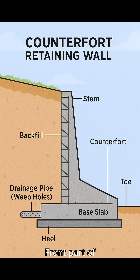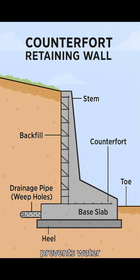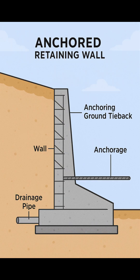Toe — the front part of the base slab. Heel — the rear part of the base slab under the backfill. Drainage pipe and weep holes prevent water pressure build-up behind the wall.